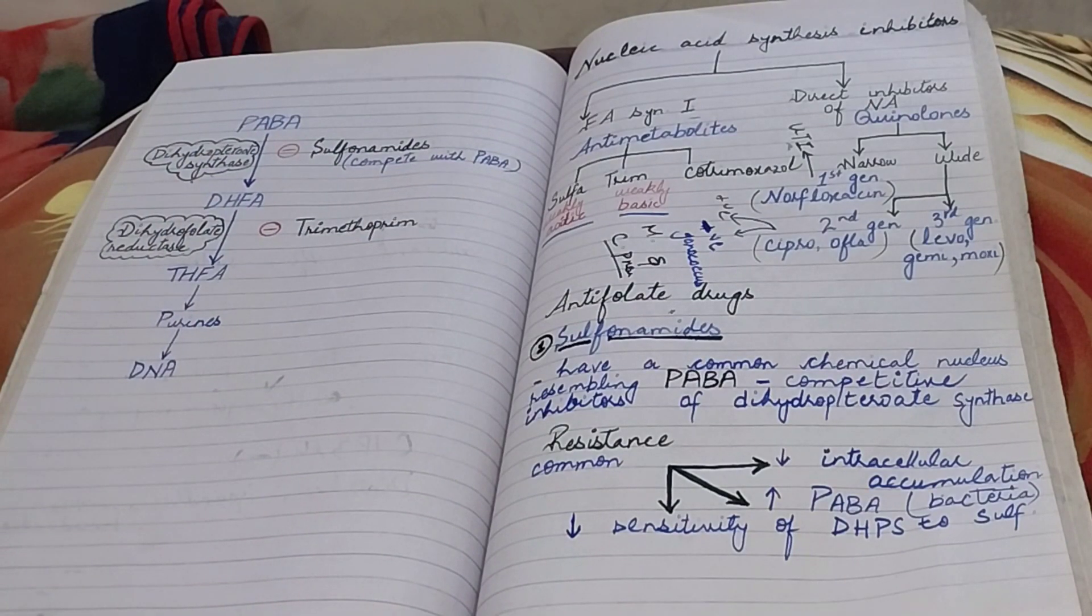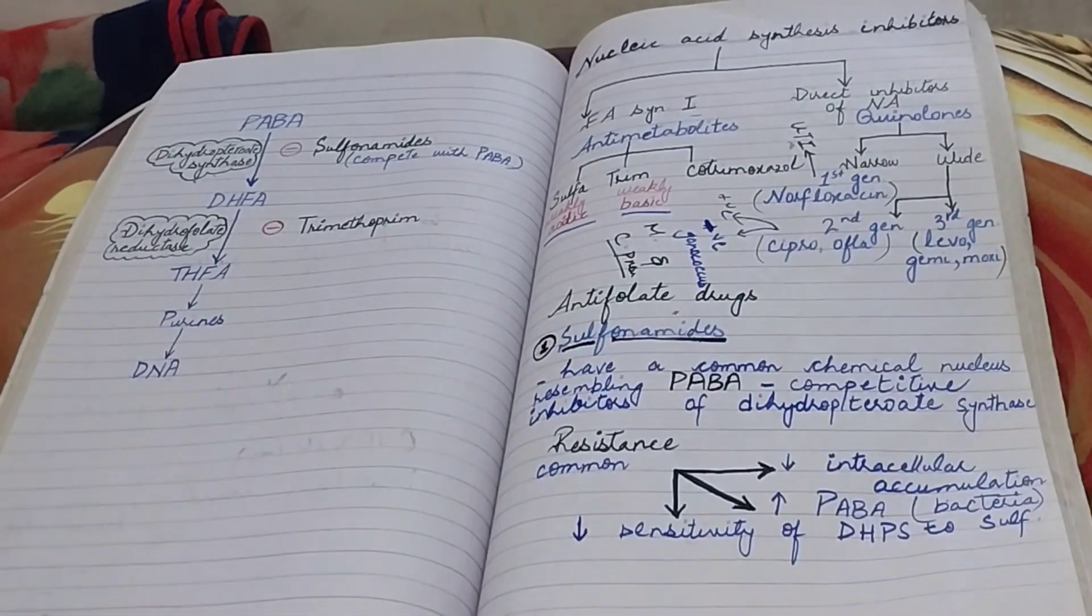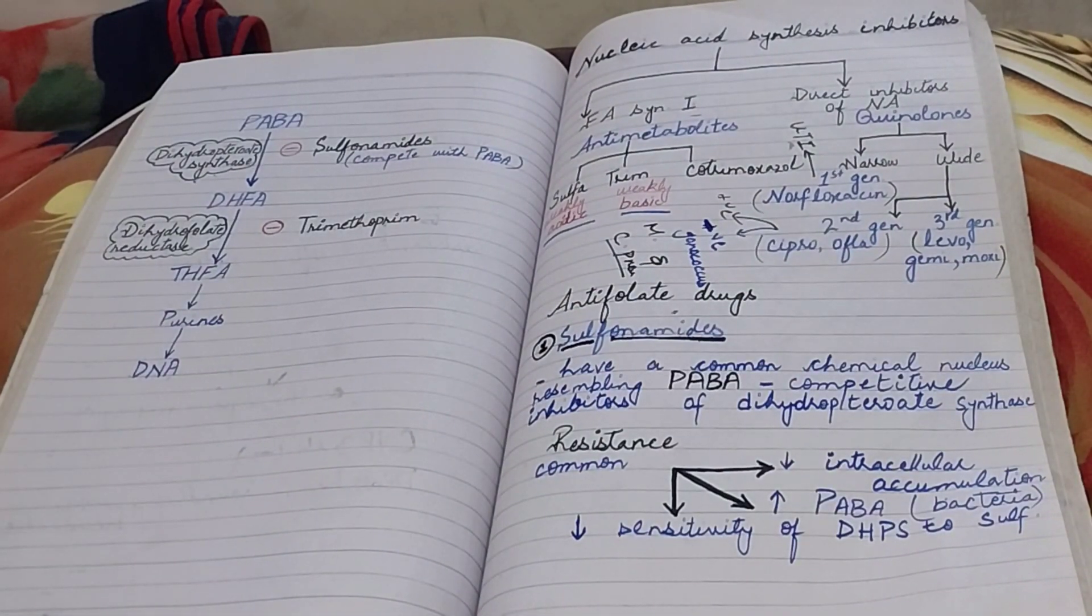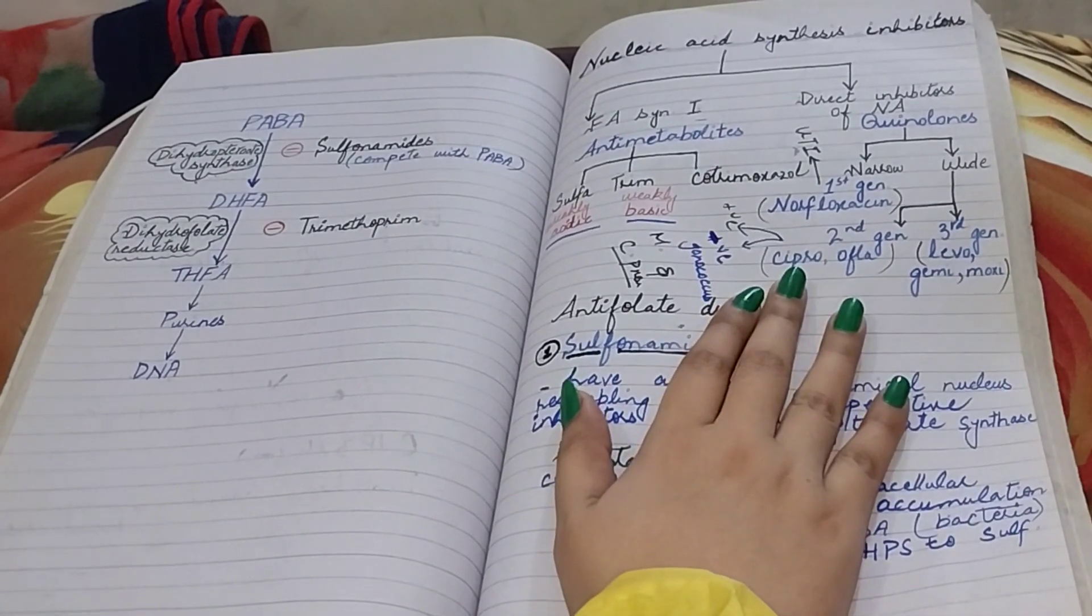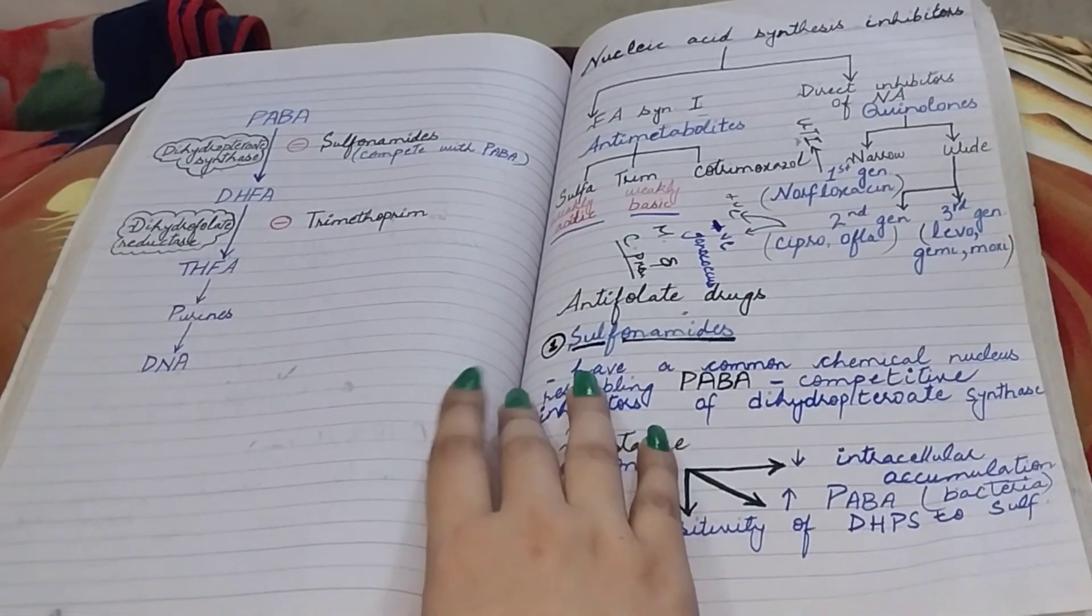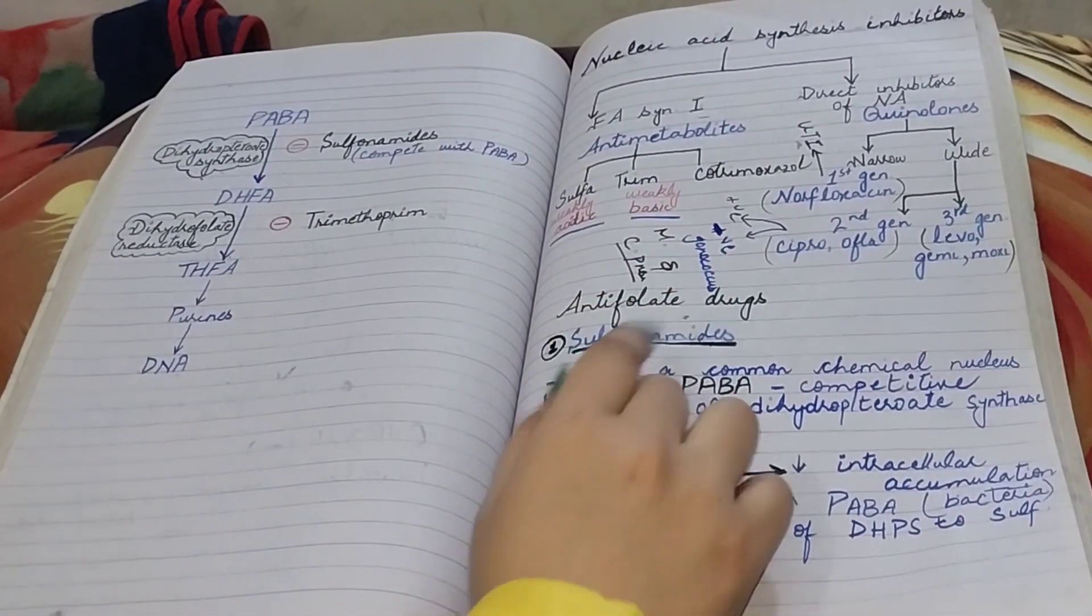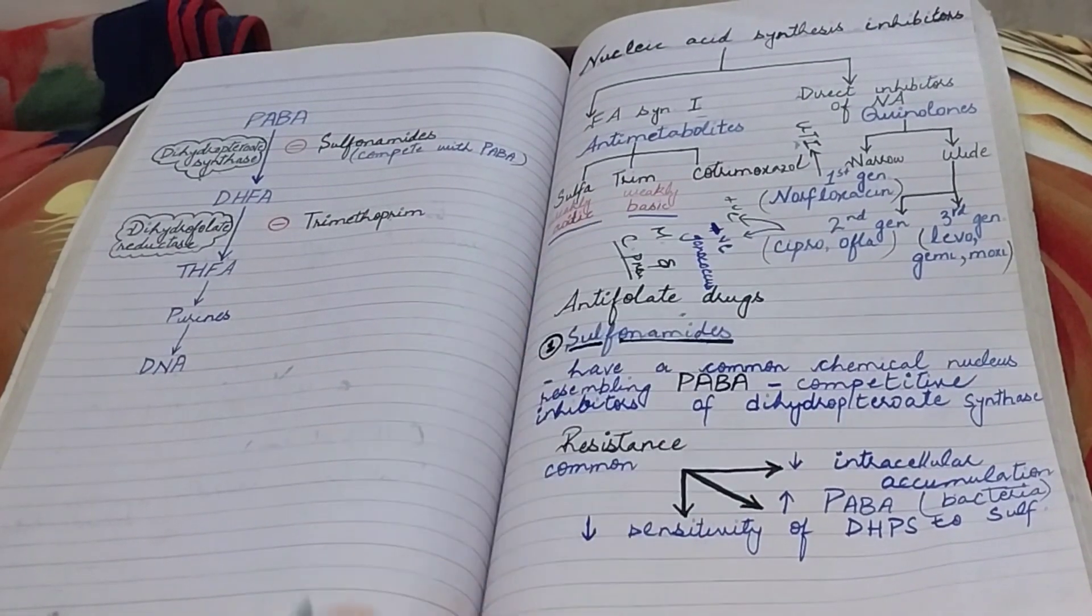Next we have third generation fluoroquinolones which consists of levofloxacin, gemifloxacin, and moxifloxacin. They are slightly less active than ciprofloxacin and ofloxacin against gram negative bacteria, but they have greater activity against gram positive bacteria as compared to second generation.